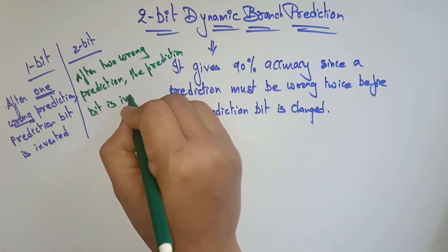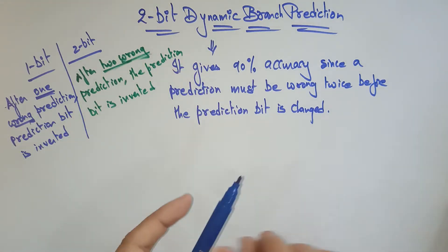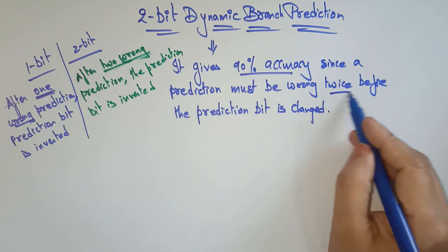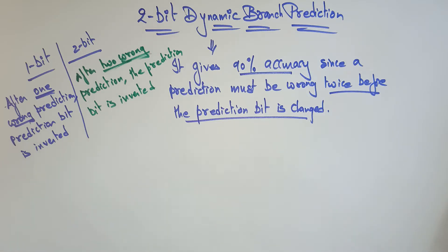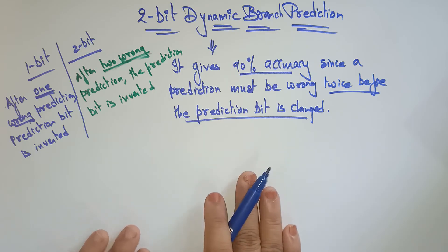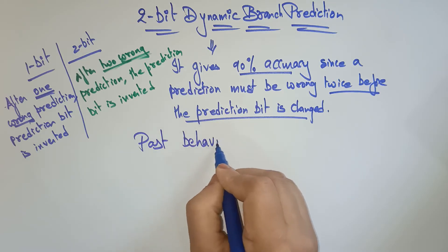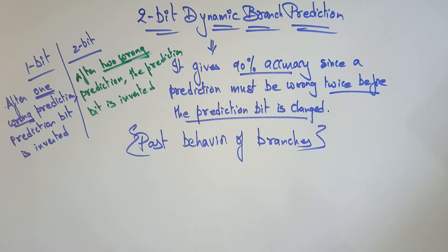So that is the meaning: 2 wrong predictions here versus 1 wrong in 1-bit. That is why it gives 90% accuracy — because the prediction must be wrong twice before the prediction bit is changed, so the accuracy is going to be increased. Dynamic branch prediction depends on the past behavior of branches, whereas in static branch prediction it does not depend upon historical trends.